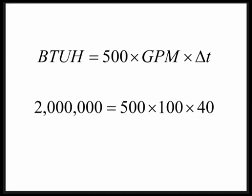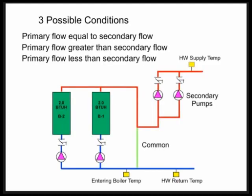Let's start with this primary and secondary example. There are three possible conditions that can exist in primary and secondary. No more, no less. Either the flow is equal in the primary and secondary, or one is greater than the other. Primary flow greater than secondary flow, or primary flow is less than secondary flow. Those are the three things that can happen.